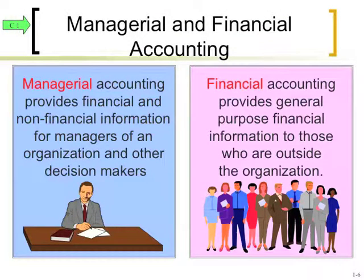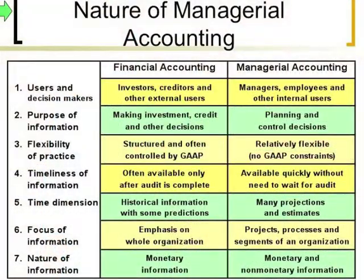On slide six, we'll see that managerial accounting provides financial and non-financial information for managers to use in decision making. Financial accounting provides general purpose financial information typically for those outside the organization to use. Moving to the next slide, you'll see who uses which. Financial accounting focuses on the past — it's all historical information. This is what you see in financial statements, audit reports, and you'll come across the term GAAP — generally accepted accounting principles. This is what you're looking at when you as an investor or somebody outside the company get hold of financial statements.